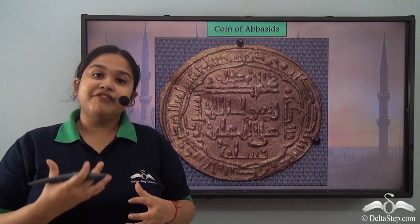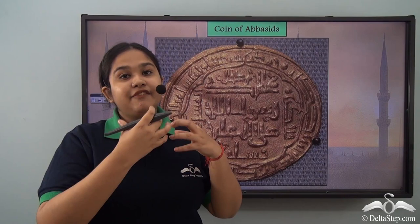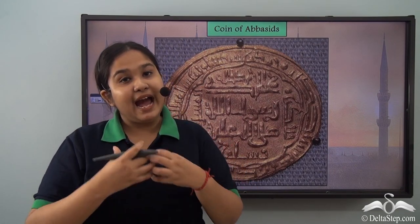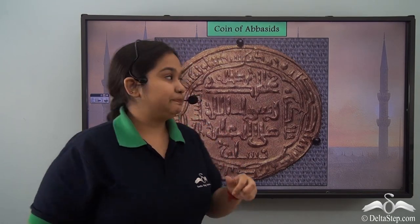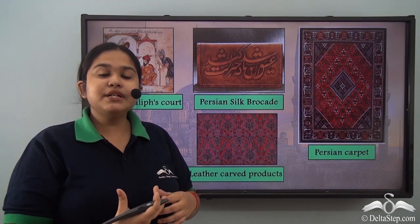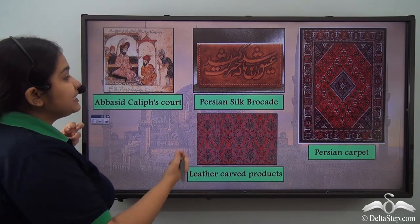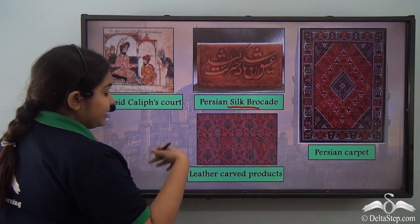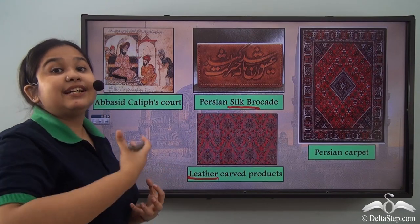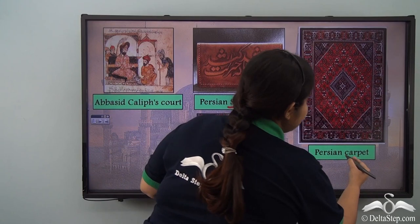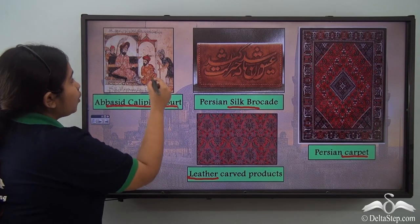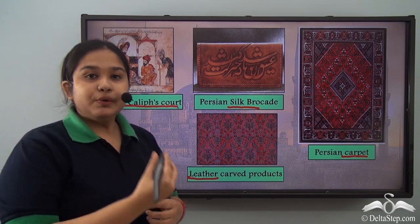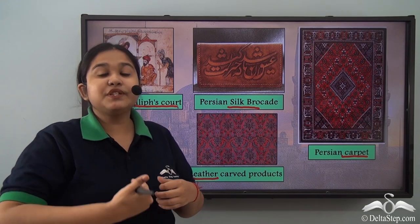The Abbasids also developed a very strong banking system — they developed a coinage system of gold and silver coins, taking inspiration from the Byzantine Empire. Their coinage system was one of the factors that made the Abbasid Empire very flourishing. We also see the development of various industries: the silk industry with brocade work, leather industries producing leather products and carpets, and various other carpet work. You can see the Abbasid Caliph's court in this picture, showing how the state patronized these people and practices.